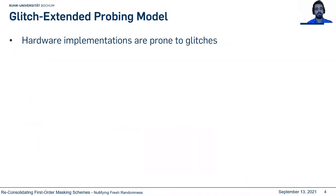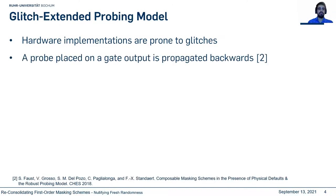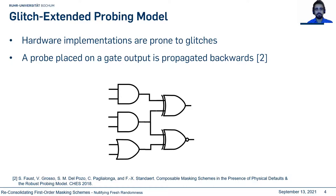However, the probing model does not properly work in hardware implementations, and the reason behind this is glitches. Glitches are unwanted transitions at the output of a combinatorial circuit. In this model, when a probe is placed on a gate, it propagates backward up to the last synchronization point. So if you probe one of the outputs, the adversary has information about all four input bits involved in the calculation.